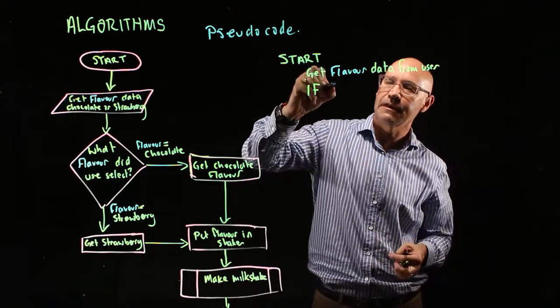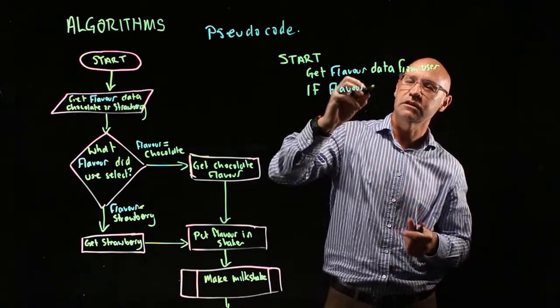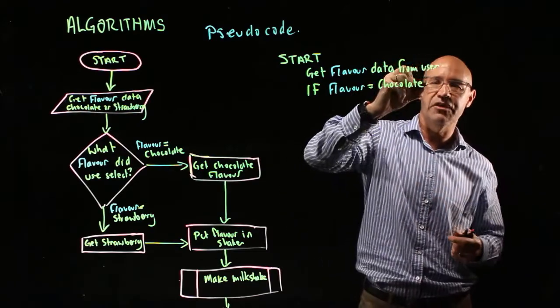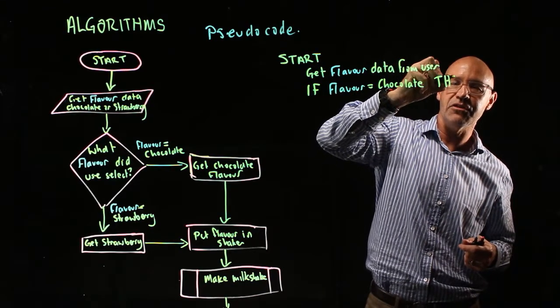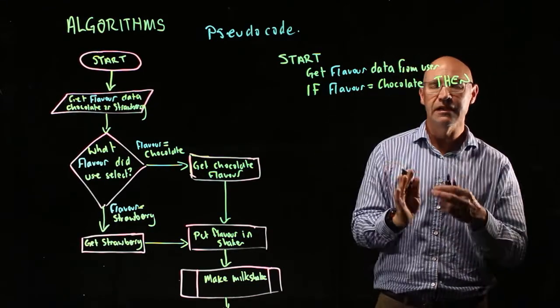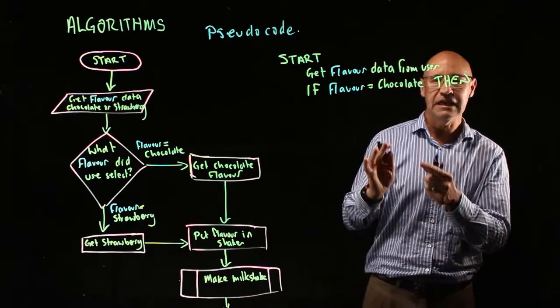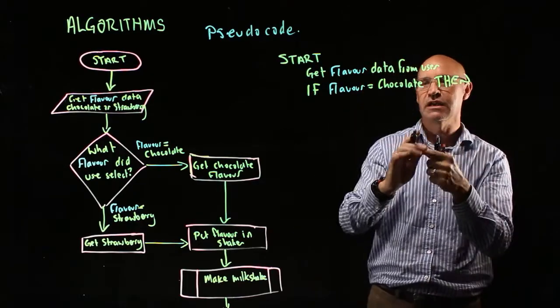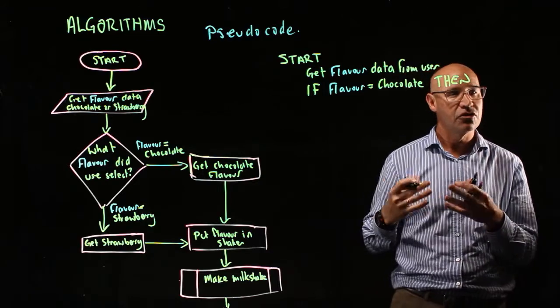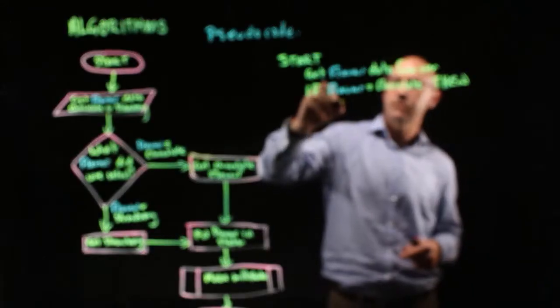So if flavor equals chocolate, now then. So this is an if-then statement. Then what do we need to do? If the flavor equals chocolate, then we need to get chocolate. So we need to get chocolate flavor.